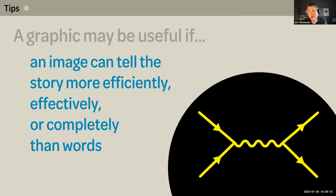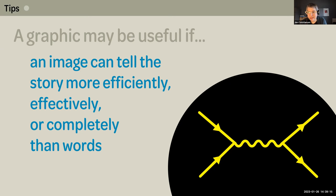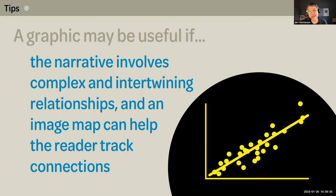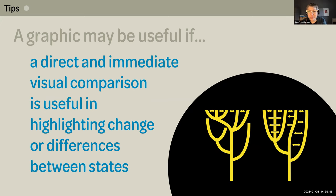When is a graphic useful? A graphic can be useful if an image can tell the story more efficiently, effectively, or completely than words — like the Feynman diagram we nodded to earlier. Or if the narrative involves complex and intertwining relationships and an image map can help the reader track connections, like a process diagram that explains photosynthesis. Or if the reader might benefit from seeing and exploring trends and patterns of the complete data set, rather than being served up a few key numbers in the text. Or when a direct and immediate visual comparison is useful in highlighting change or differences between states, such as competing hypotheses or before and after views.